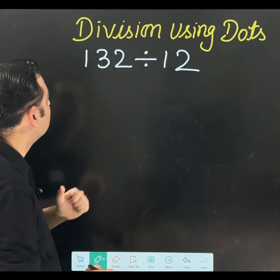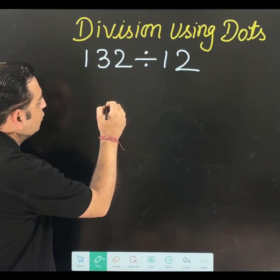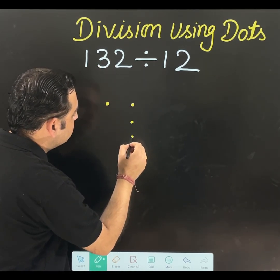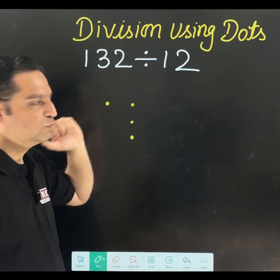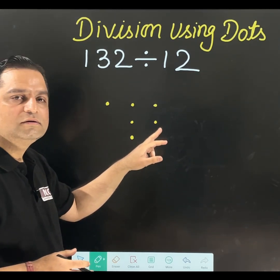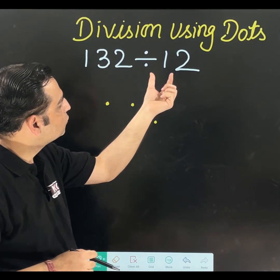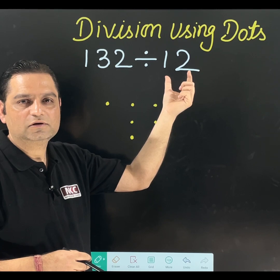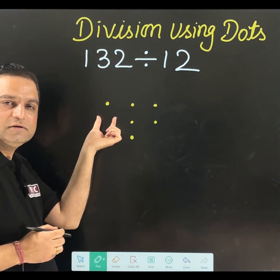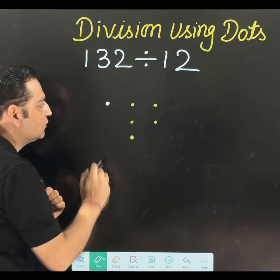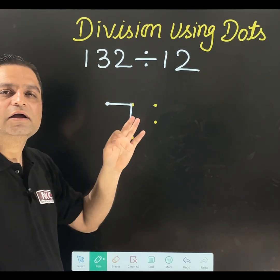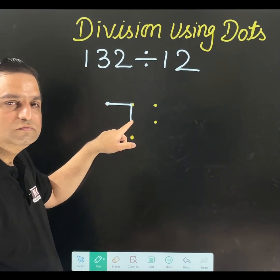This is one question written on the board but we are going to do many questions today. Let us see the way it is very interesting and students will definitely are going to like it. We usually use this method in the schools, in the classrooms to make the regular teaching interesting. What we will do, 132 is there. For 1, I am going to write 1 dot. Check it very carefully. For 3, I am going to place 3 dots and for 2, I am going to mark 2 dots.